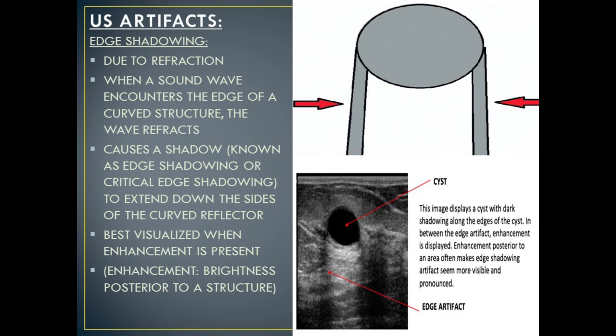Edge shadowing is the next type of velocity error artifact. Edge shadowing occurs due to refraction — when a sound wave encounters the edge of a curved structure, the sound wave refracts, causing a shadow known as edge shadowing or critical edge shadowing to extend down the sides of the curved reflector. This is best visualized when enhancement is present. Enhancement is brightness posterior to a structure, occurring when there's no attenuation of the sound beam through an area. The edge shadowing will appear as dark lines of shadowing on the edges of the enhancement.